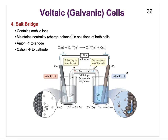The next part of our voltaic cell is the salt bridge. You would not have a complete circuit if the two cells were not connected, so part of the function of the salt bridge is to complete the circuit. The salt bridge is typically made out of porous glass embedded with electrolytes — soluble or mobile ions — and those ions have the ability to maintain charge neutrality in the solutions of both cells.